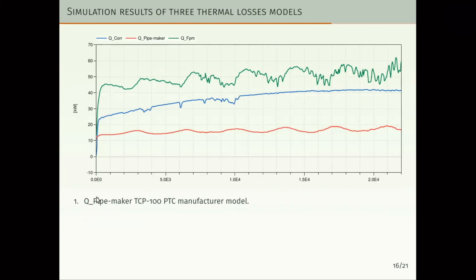The first simulation result of this model has been represented jointly with other models of losses of a parabolic trough collector. For example, the first one is the model based on the information given by the manufacturer of the parabolic trough collectors, TCP-100, that returns these losses along an operation day. The second model is the classical steady state correlation model that we have been using in the past. And the third one is the first principle model, heat losses, that represents the losses that we are presenting in this paper, where we can see the dependence of the wind velocity.